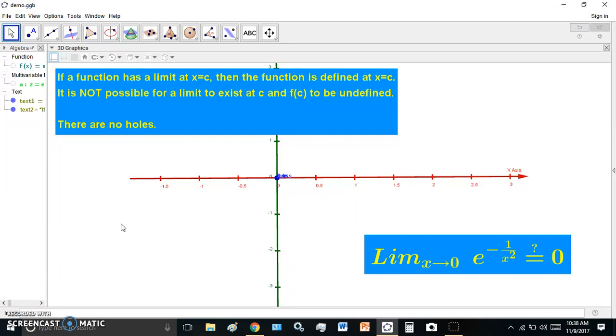It's been around for a long time and I've been discussing this on the forum called Sci.Math. So I challenged the fools who hang out on Sci.Math to find a function that actually is a counter example which proves my statement wrong. Let's quickly take a look at what my statement says. It says if a function has a limit at a particular point C, then the function is defined at x equals C. It is not possible for a limit to exist at C and f of C to be undefined.